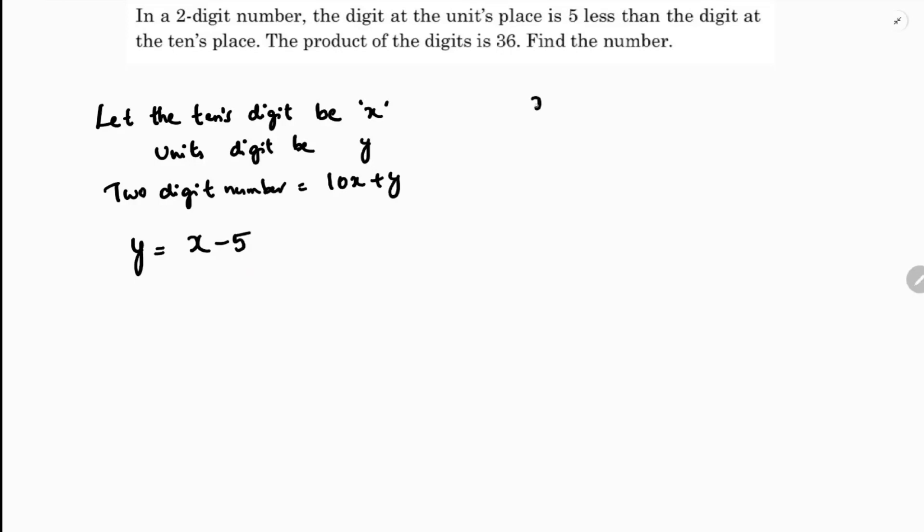The product of the digits x into y is 36. So x times x minus 5 equals 36. x square minus 5x equals 36. x square minus 5x minus 36 equals 0.